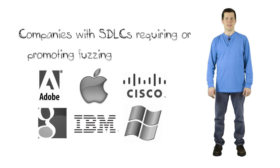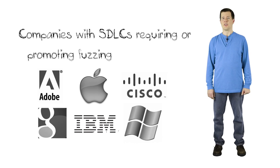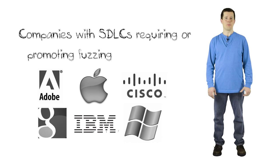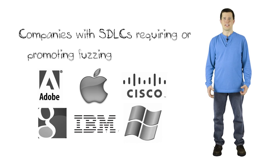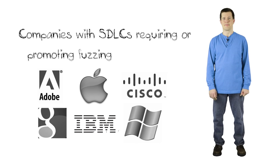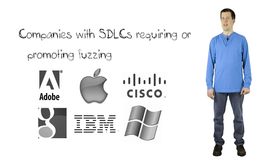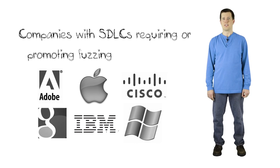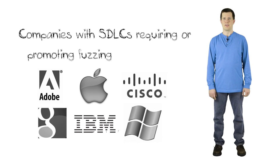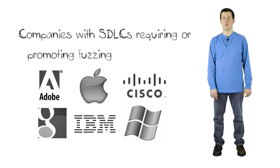Fuzzing is a relative newcomer in software testing but is already found in all mature software development lifecycles, because it's simply very good at finding unknown vulnerabilities. On the builder side, Microsoft has included fuzzing in its Secure Development Lifecycle, Cisco has a secure development lifecycle for all their products, Apple has a secure coding guide for iOS and OS X recommending fuzzing, and other industry giants such as Adobe, Google, and IBM are also strong supporters of fuzzing.